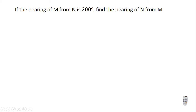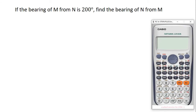Let's move on to the next question. The bearing of M from N is 200 degrees; find the bearing of N from M. Once again we are finding the back bearing. With the formula: if the angle is less than 180 degrees add 180 degrees; if the angle is more than 180 degrees subtract 180 degrees from it. Here we have 200 degrees, which is greater than 180 degrees, so we subtract: 200 − 180 = 20 degrees. Using the formula, the back bearing is 20 degrees.